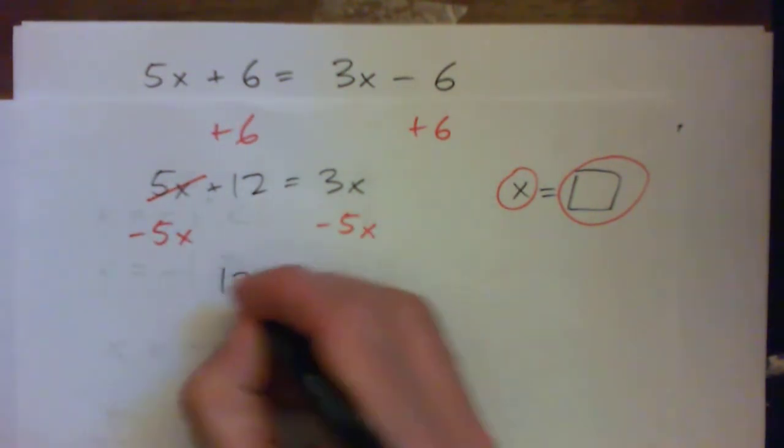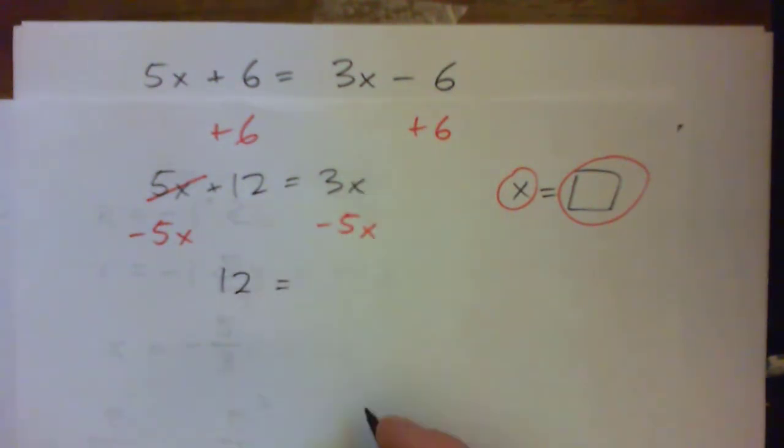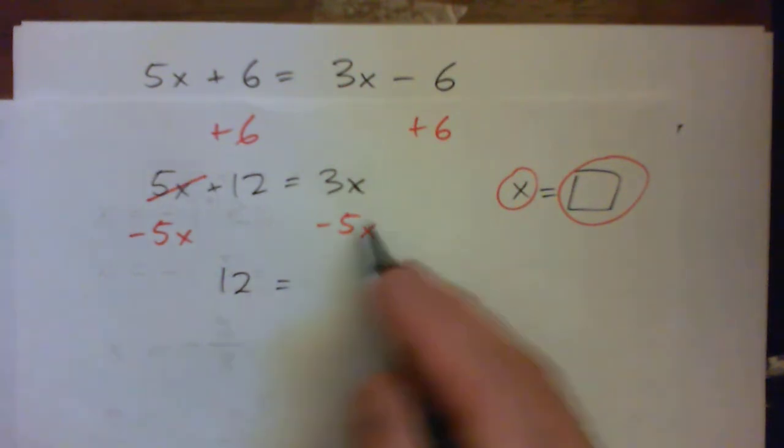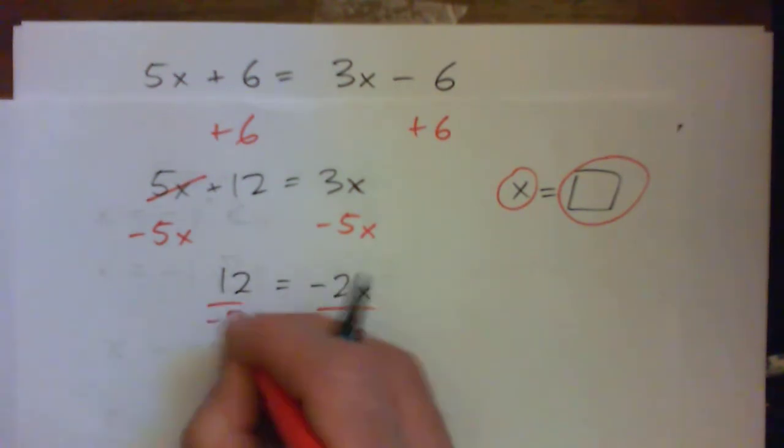So that is the trick. You've got to get x's on one side, numbers on the other. Negative 5. Five bad guys and three good guys. Negative 2x. And then divide by negative 2. Now again, we have negative 6 is x.